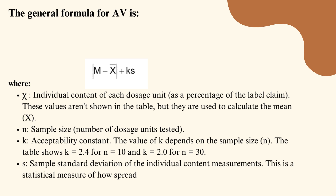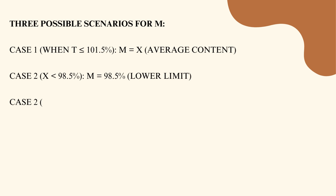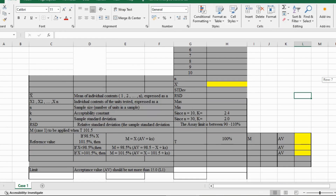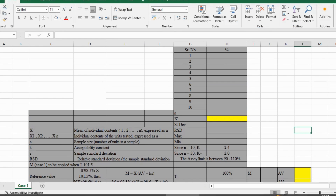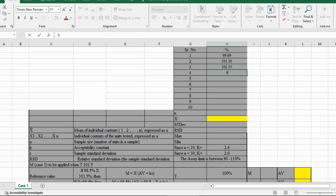S is a statistical measure of how spread out the data points are relative to the mean. There are 3 possible scenarios for N: case 1 and case 2. Let us understand with an example — let's open Excel and add 10 sample values.